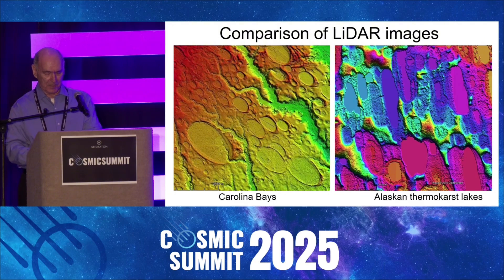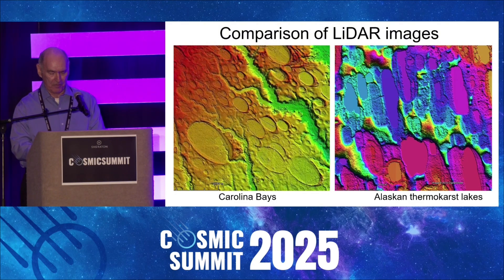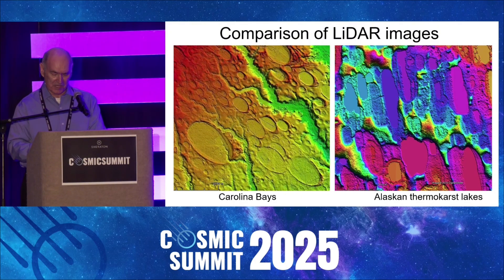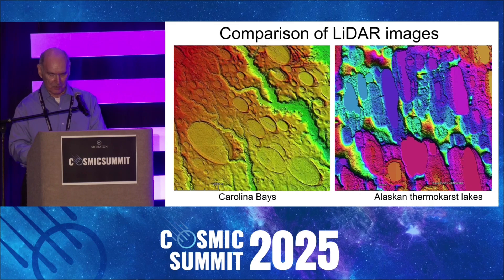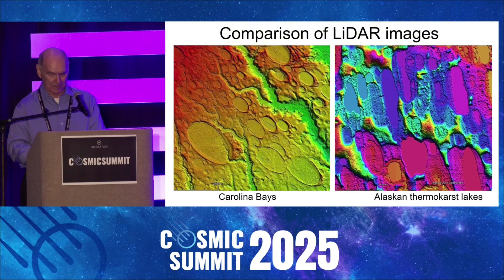When LiDAR images became commercially available in the mid-1990s, they revealed significant differences between the Carolina Bays and the thermokarst lakes in Alaska. Thermokarst lakes are created when permafrost melts and produces sinkholes that fill with water. The Carolina Bays have smooth elliptical shapes with raised rims, whereas the thermokarst lakes have rough, irregular borders and do not have the overlaps that are present in many Carolina Bays.